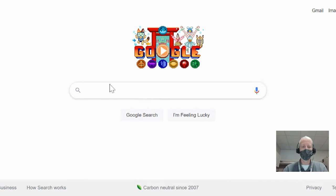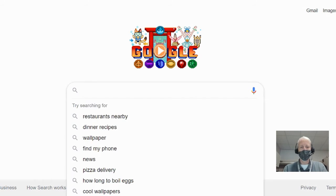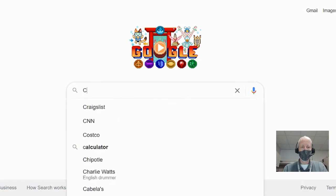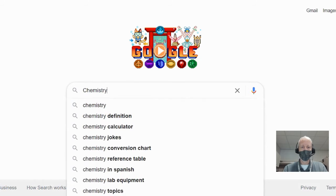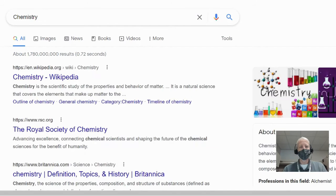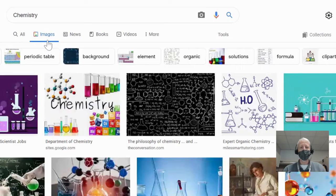So let's say that the class I would like to have an image for is for chemistry. And so I do my search and then I go to images and it's going to come up and give me all these images.